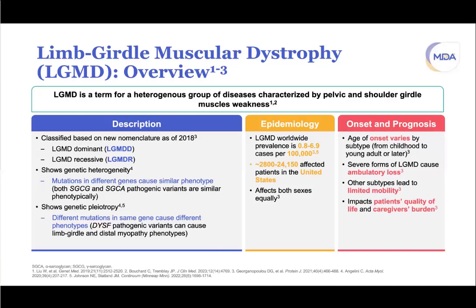The epidemiology of LGMD varies considerably by region. Worldwide prevalence is estimated between 0.8 and 6.9 cases per 100,000, translating to roughly 2,800 to 24,000 cases in the U.S., though the actual U.S. prevalence is unknown. Some subtypes, like Fukutin LGMD, have higher prevalence in specific regions such as Japan. Both sexes are equally affected, as these are autosomal diseases.